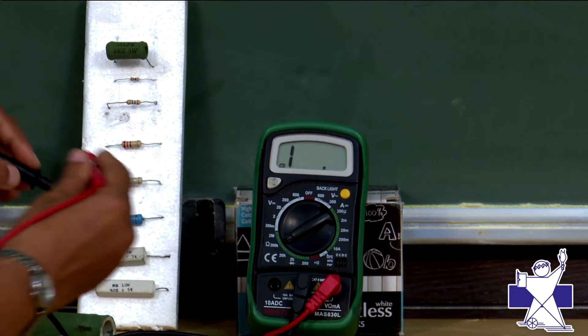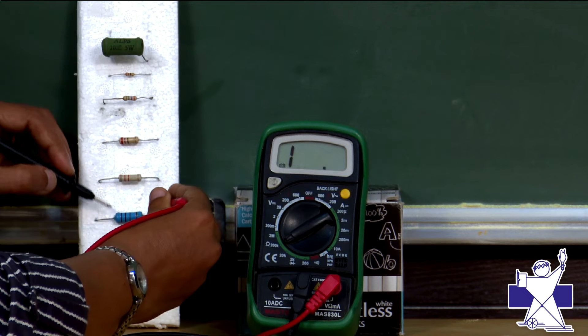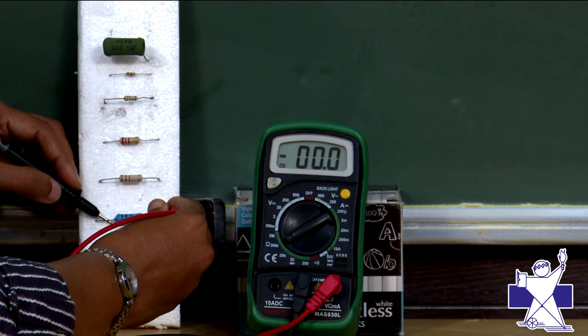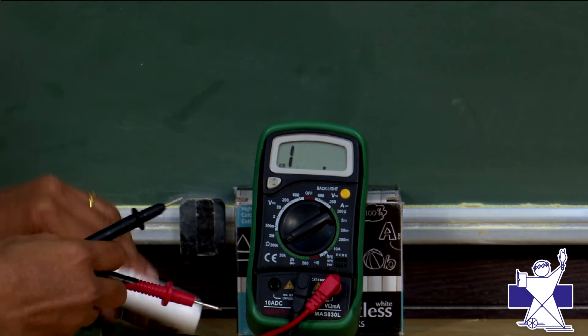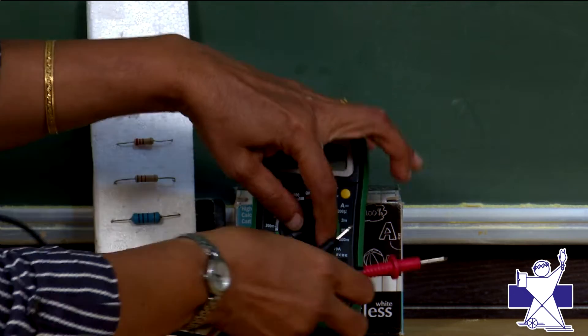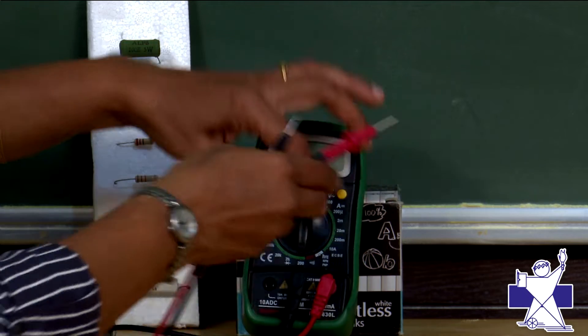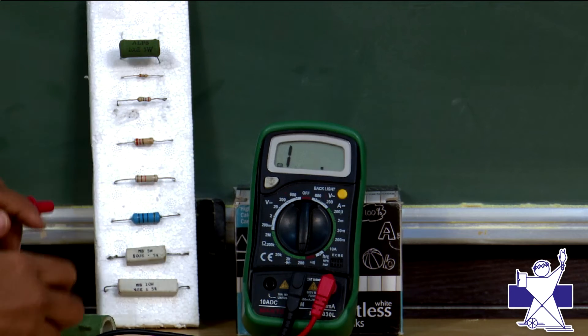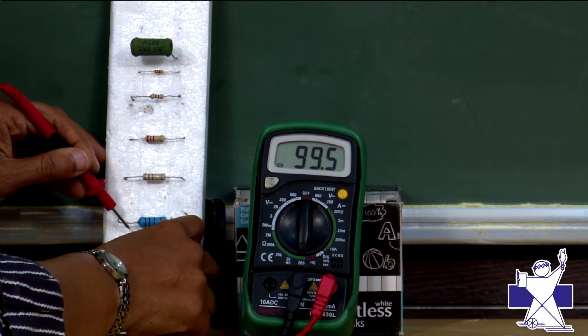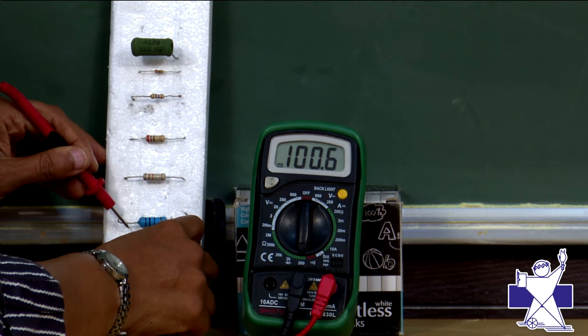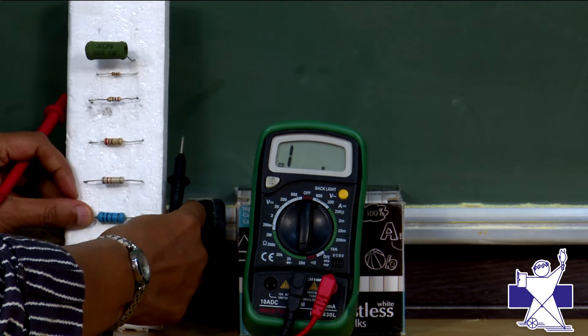Now suppose I connect over here. See the resistance is almost zero, that means you have to change the range. We have to change the range. I am coming to 200 ohms. 200 ohms I am coming and now let us measure this. 100 ohms resistance it is. So, in this way we can measure resistance.